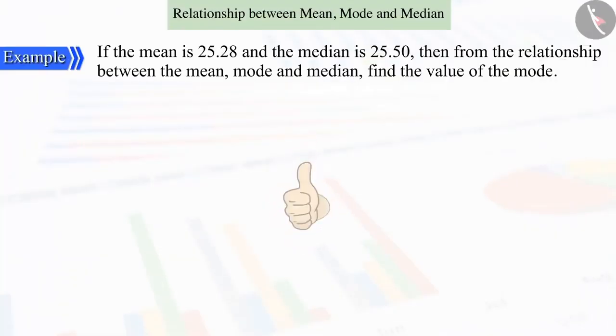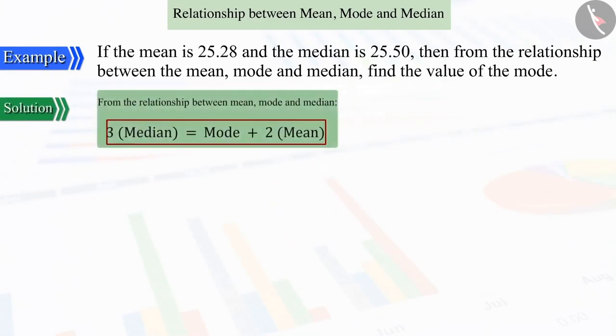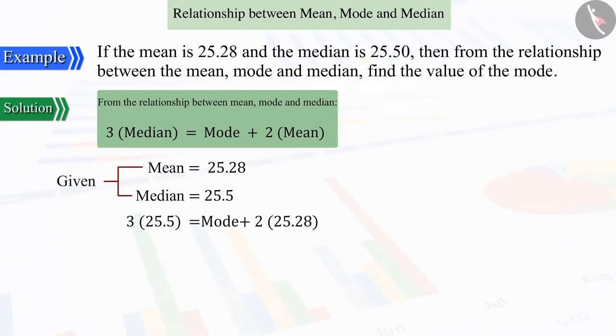Good. Upon substituting the value of the mean and the median in the relationship between these three and solving, we get the value of the mode as 25.94 approximately.